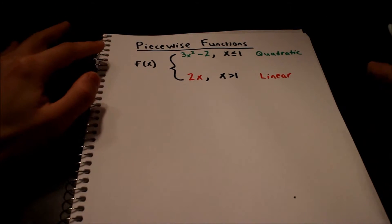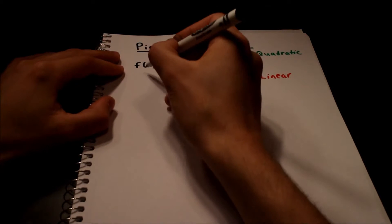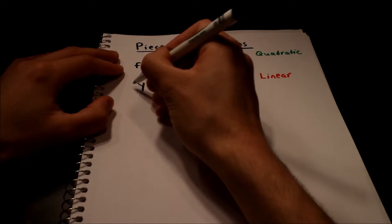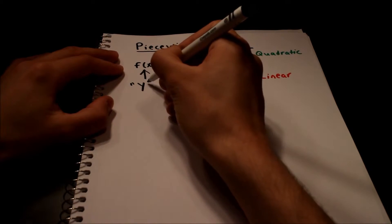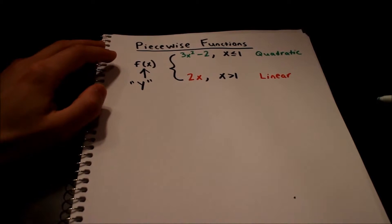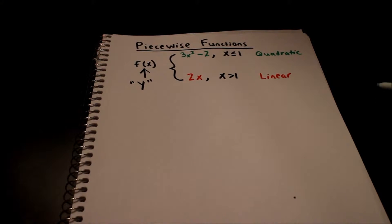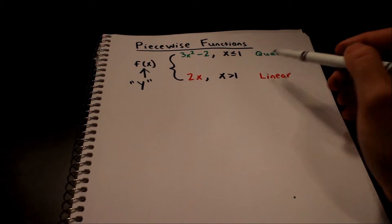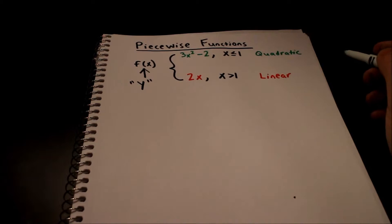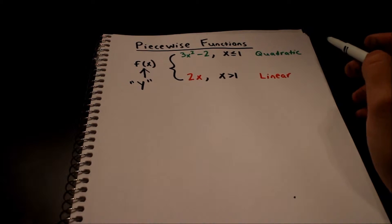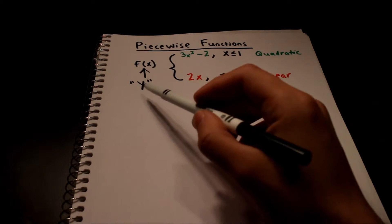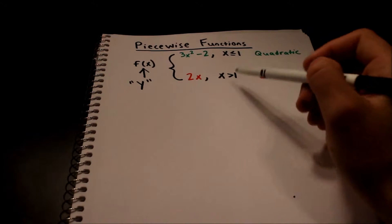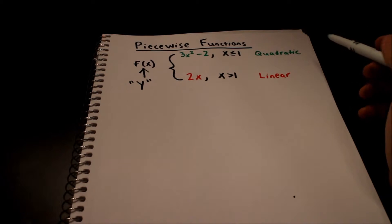Just want to take a step back to refresh your memory. This f of x is the same thing as y. Remember, y is our output — you put a value into the equation and it spits out an answer, and that answer is what we call y. You input your x values into different equations when there are different inputs.